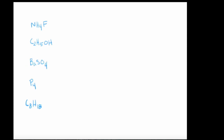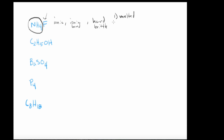This compound has ammonium as the polyatomic cation and fluoride as the anion, so it is ionic with an ionic bond. It's going to be a hard, brittle substance. It conducts only when melted or in the form of a solution. It's going to have a high melting point.